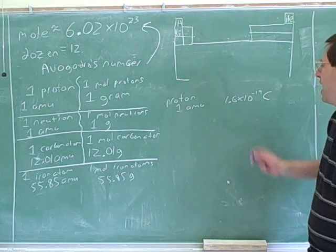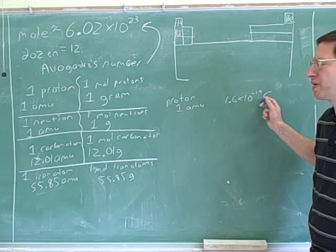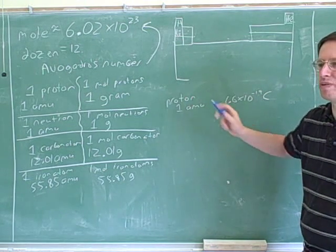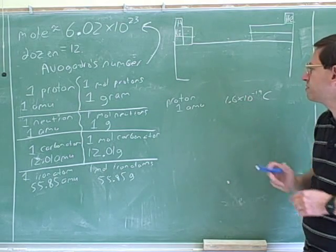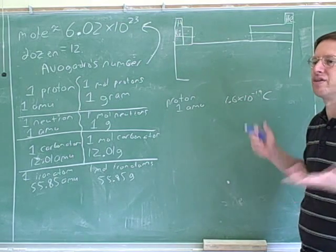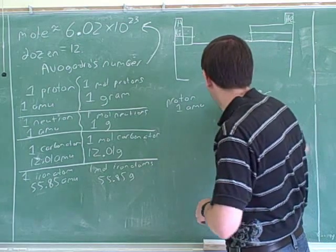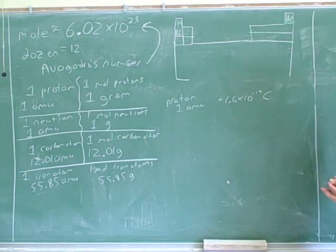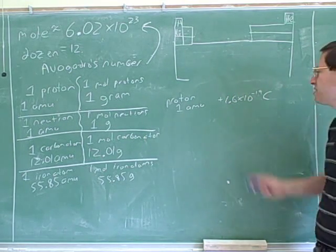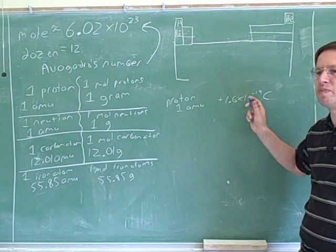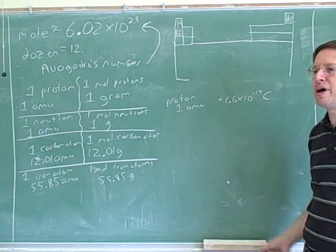But again, this is a very tiny number. It makes sense that this is tiny because this is just one proton. Obviously, one proton has very little charge. By the way, is this a positive charge or a negative charge? Positively charged. So it's very important to know protons are positively charged. But this number here is too small to be useful. So again, we need a better unit.